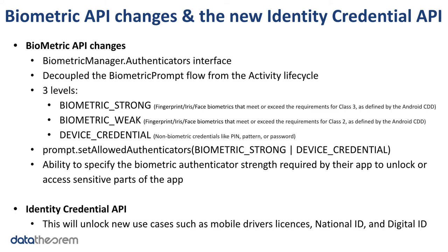The identity credentials API is a new API primarily aimed at bringing electronic IDs to mobile devices. In its current form, it includes classes and interfaces corresponding to newly introduced ISO standards for digital IDs, ensuring standards for digital signing, encryption, and data sharing are maintained. Developers now have a reliable framework for storing digital IDs and verifying authenticity. Documentation is currently limited as standards for digital IDs are still being debated.